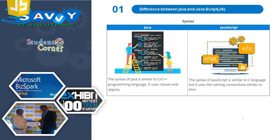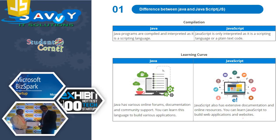The syntax of Java is similar to C or C++ programming language. It uses classes and objects. The syntax of JavaScript is similar to C language but it uses the naming convention similar to Java. Java programs are compiled and interpreted. JavaScript is only interpreted as it is a scripting language or plain text code.